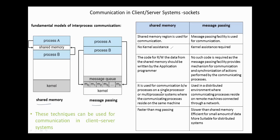Shared memory strategy is used on a single processor or multiple processor systems where the communicating processes reside in the same machine. Message passing is suitable for distributed systems where communicating processes reside on remote machines connected through a network. Message passing is slower than shared memory, but it is more efficient for a small amount of data.